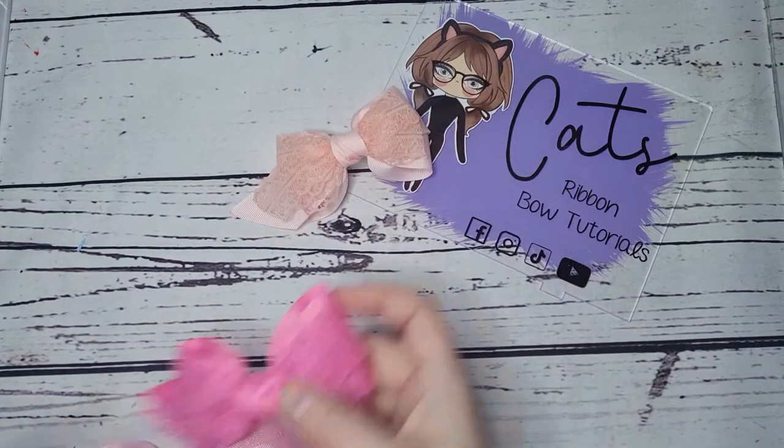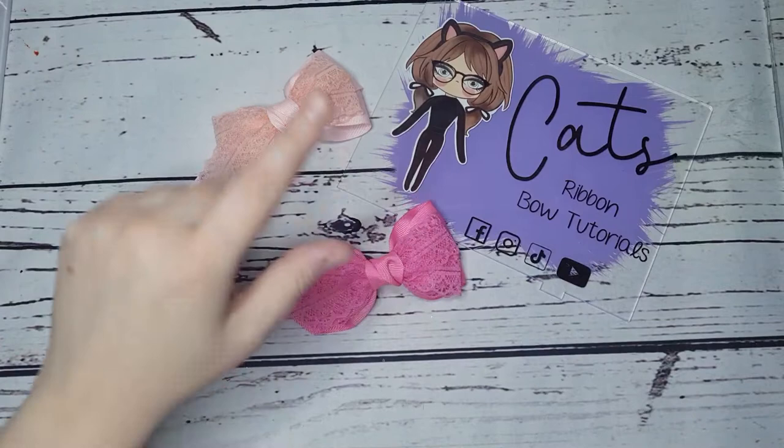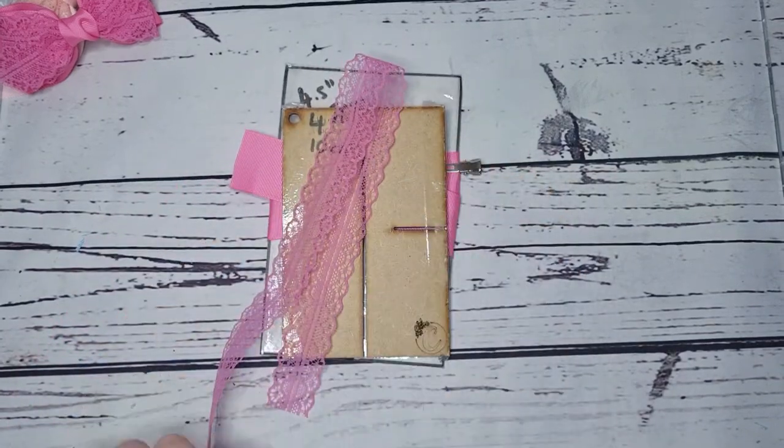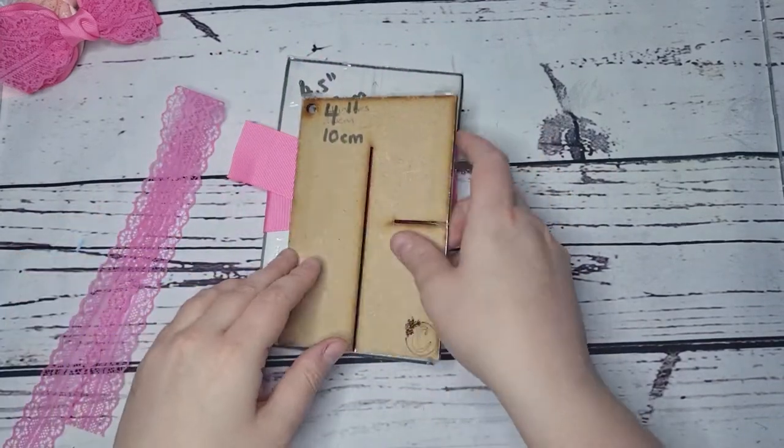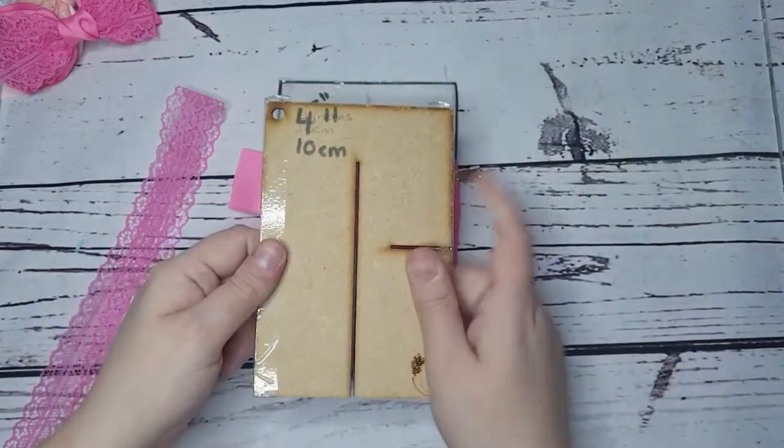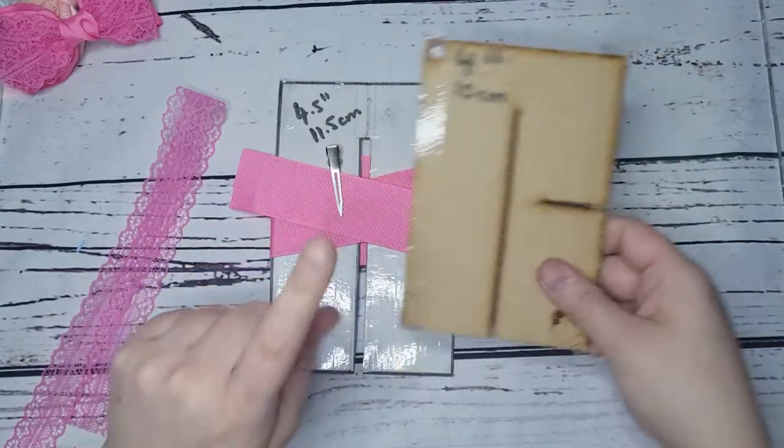We're using 1.5 inch ribbon and one inch lace. Let's move everything out of the way. We're using two different templates - the four inch template and I have made a DIY version of the four and a half because I don't have a four and a half template in wood.